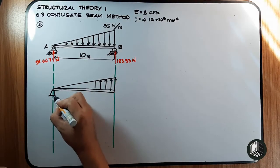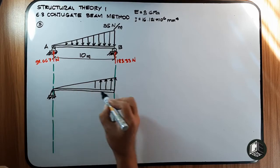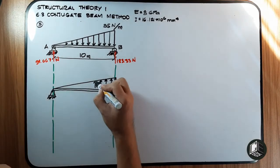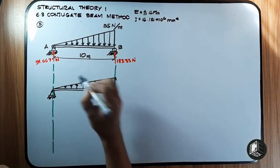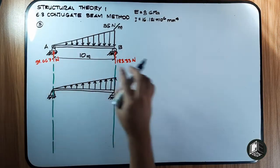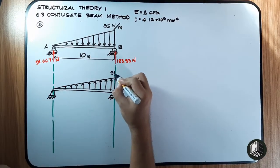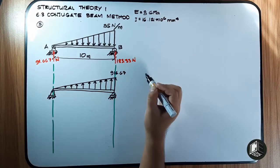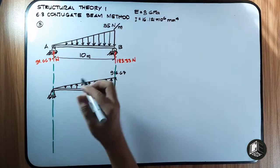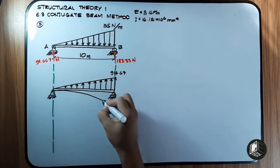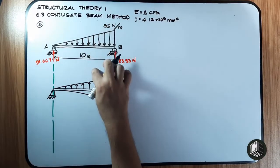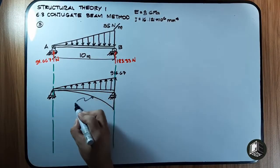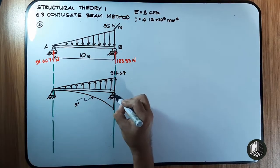The support at A is a hinge and at B is a roller. Taking moment at B, the reaction gives 91.667 multiplied by 10, which is 916.67. The resulting moment diagram shape: since the load is first degree, the shear is second degree, and the moment becomes a third-degree curve.